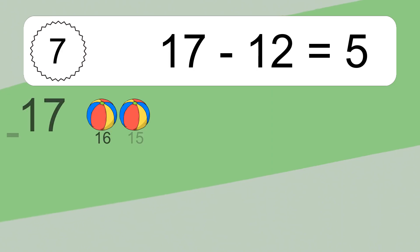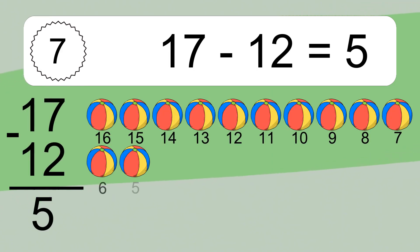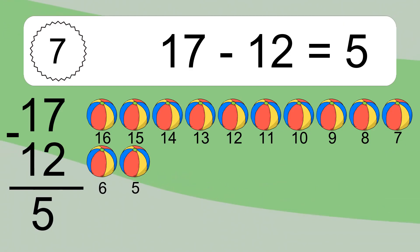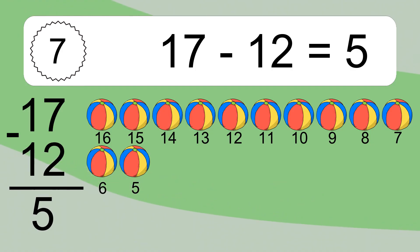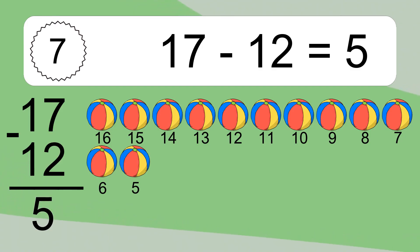17 minus 12 equals 5. Let's count it: 16, 15, 14, 13, 12, 11, 10, 9, 8, 7, 6, 5.